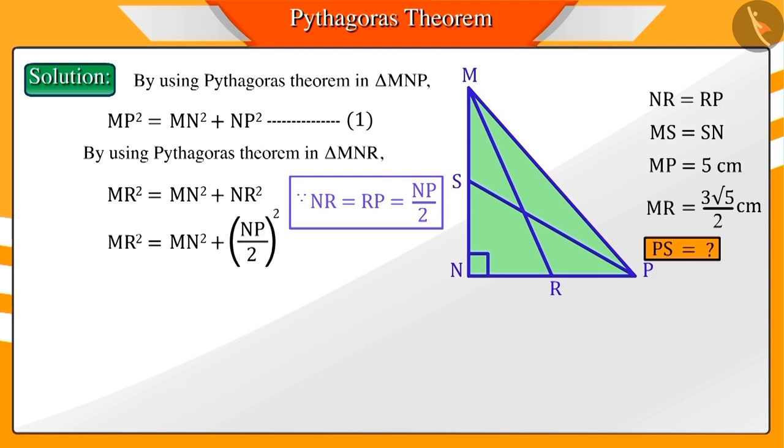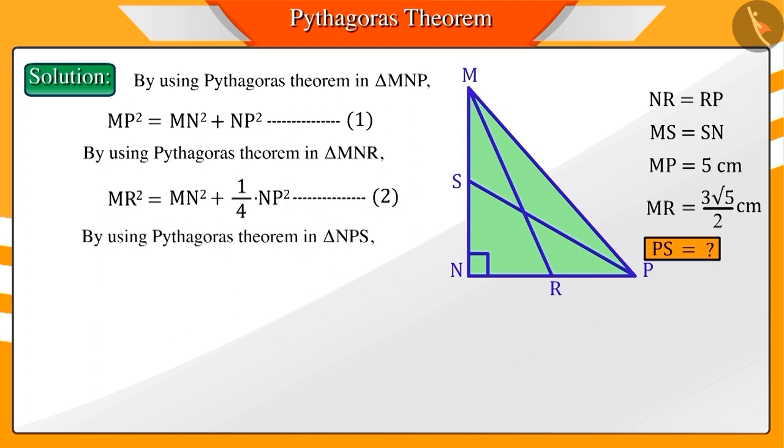On further solving, we get equation 2. Similarly, we get equation 3 from right-angled triangle NPS.